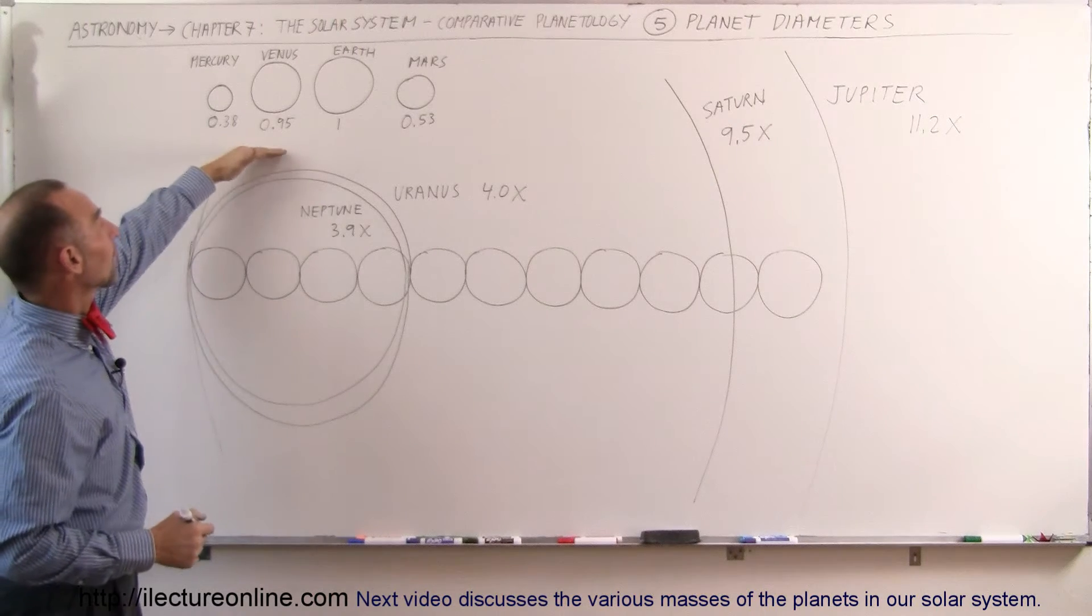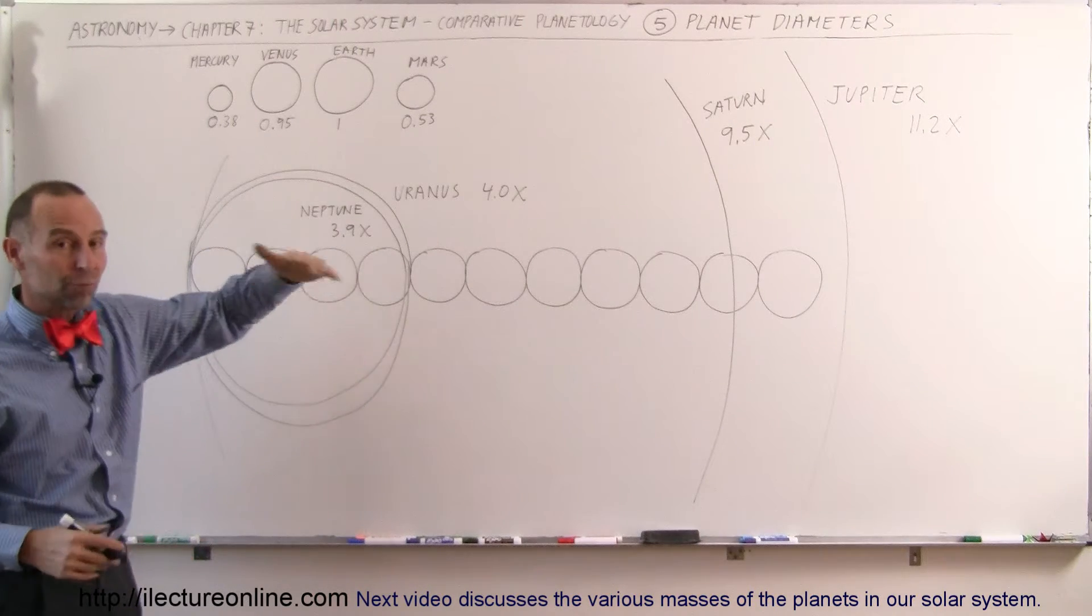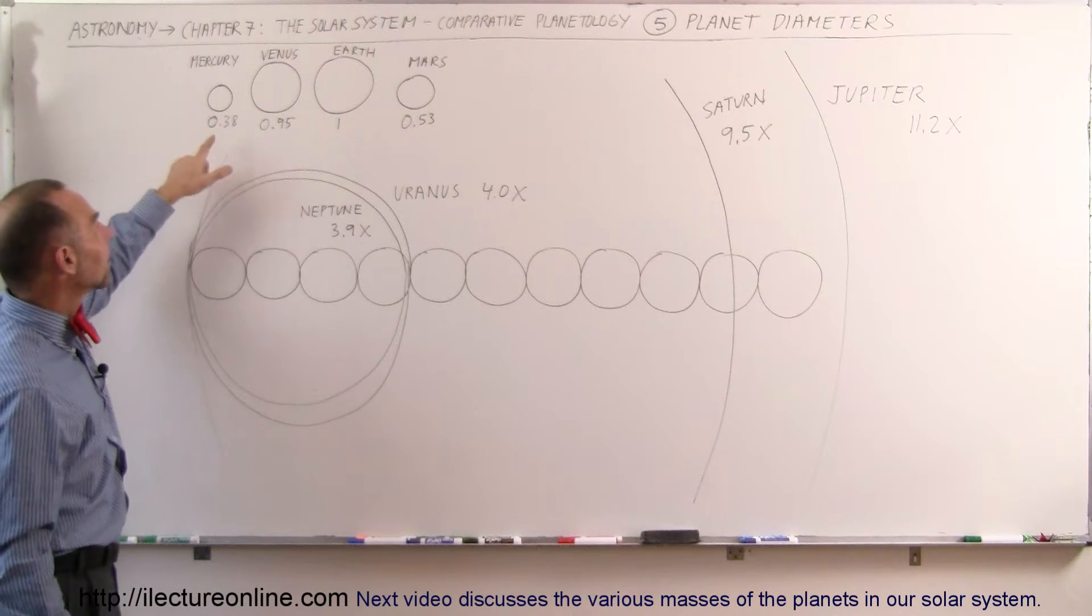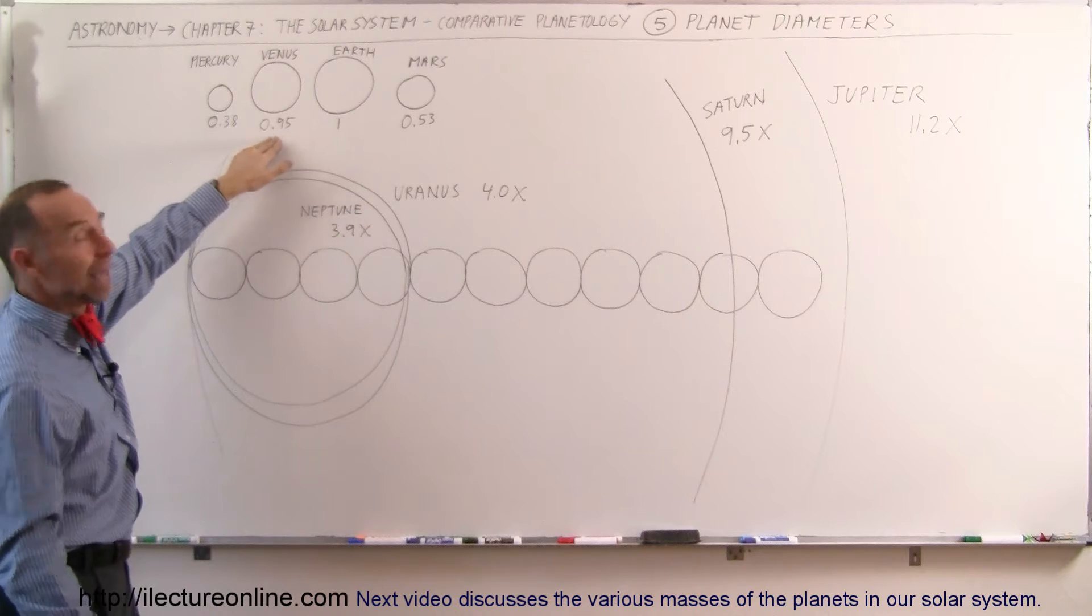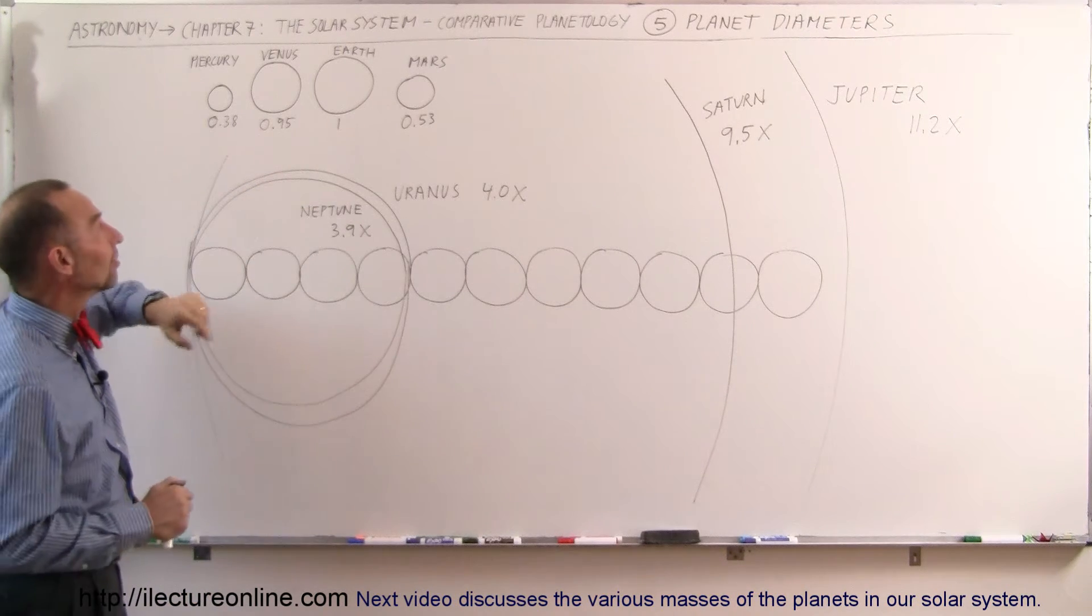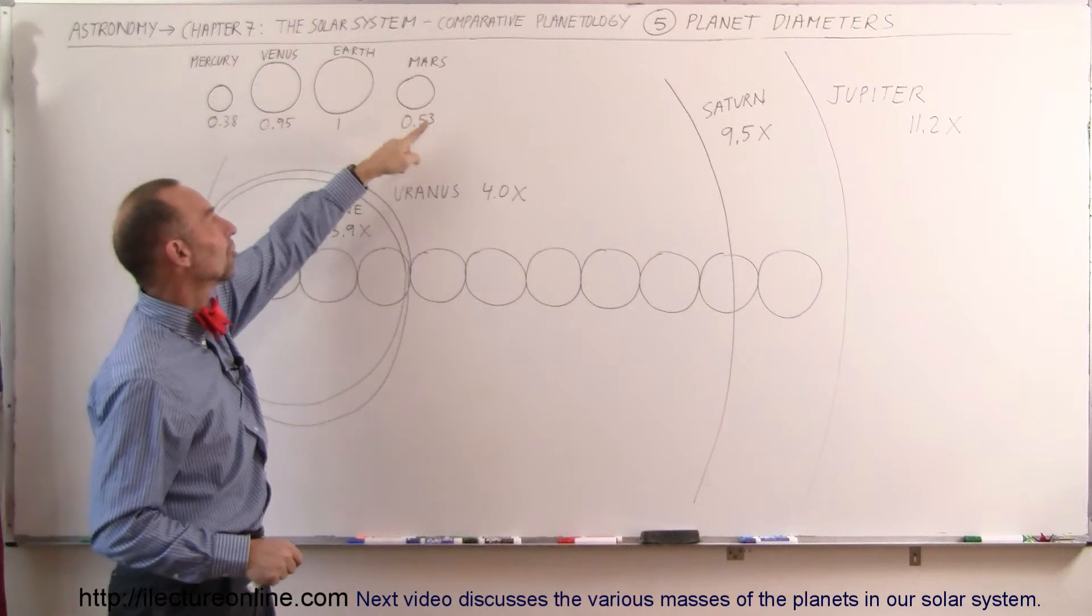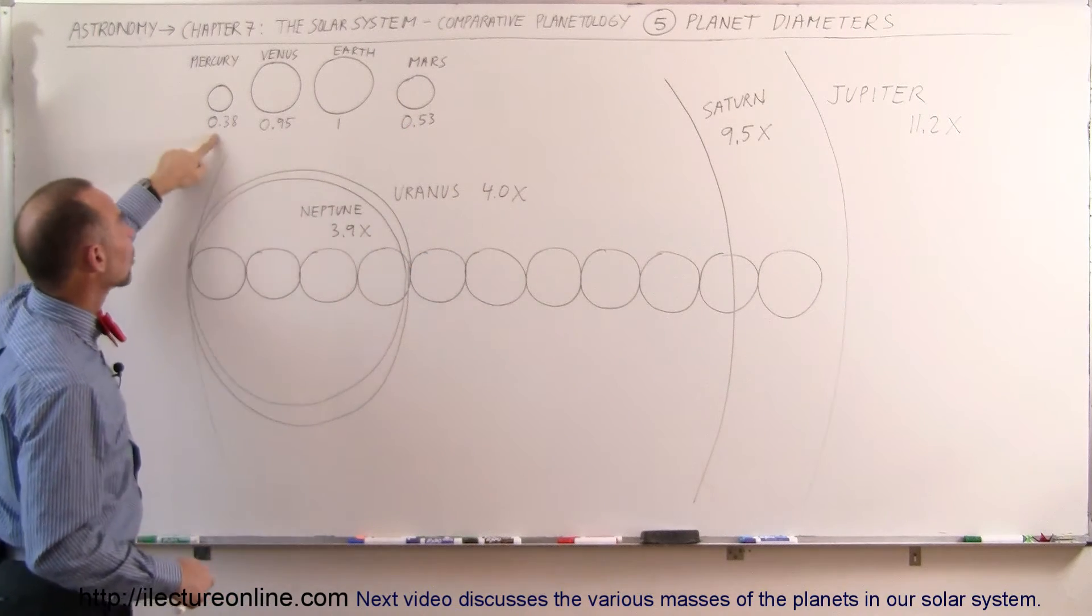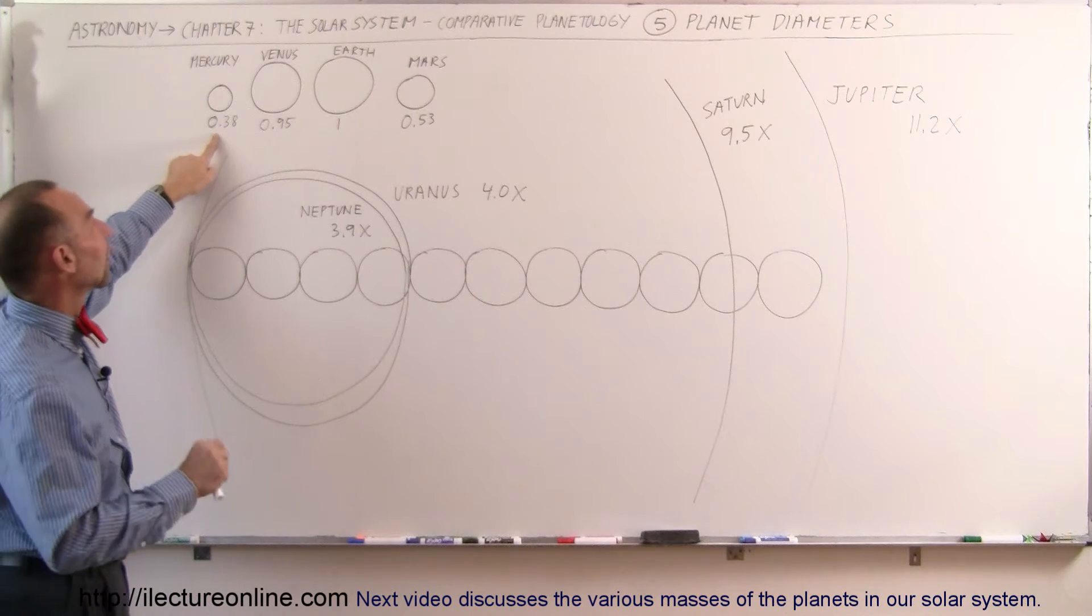Starting with the terrestrial planets, you can see that those are definitely the four smallest of the eight planets in the solar system by far. Notice that Earth and Venus are almost the same size. The diameter of Venus is about 95% the diameter of Earth, so they're roughly the same size. Notice the diameter of Mars is about half, about 0.53 the diameter of the Earth, and Mercury is a little bit over a third the size of the Earth.